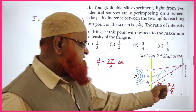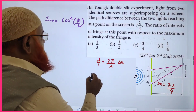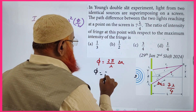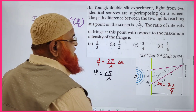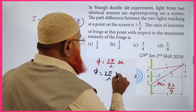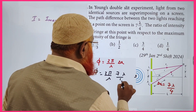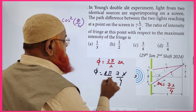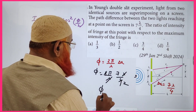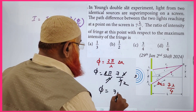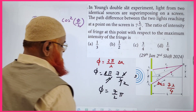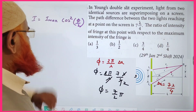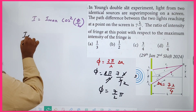The phase difference is φ = (2π/λ)·Δx = (2π/λ)·(7λ/4). The λ cancels, giving φ = 7π/2. We substitute this value into the intensity formula.